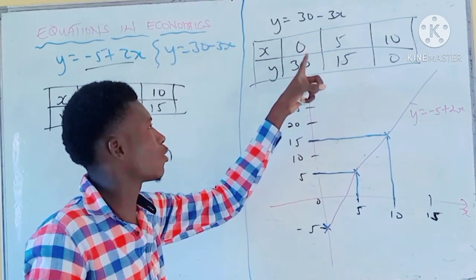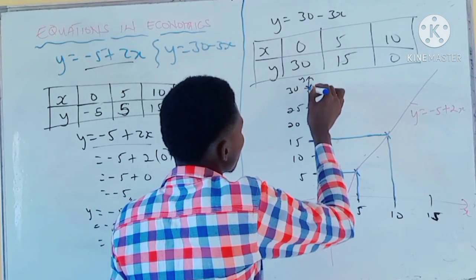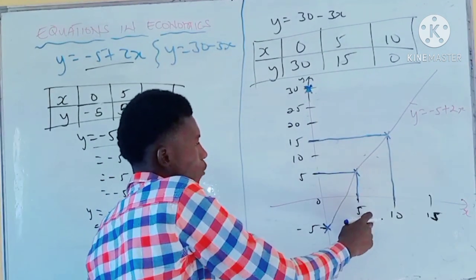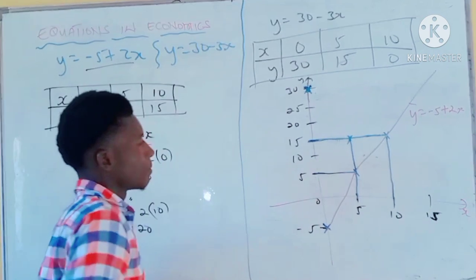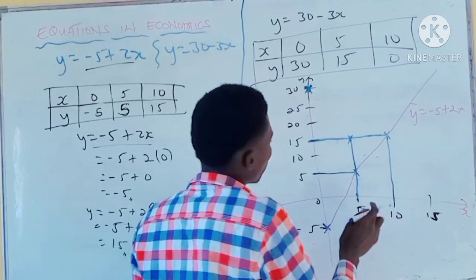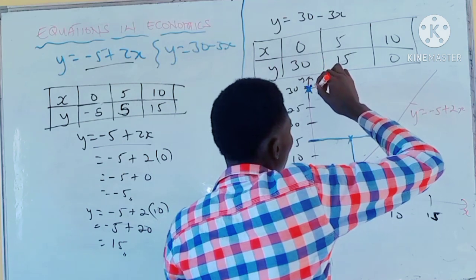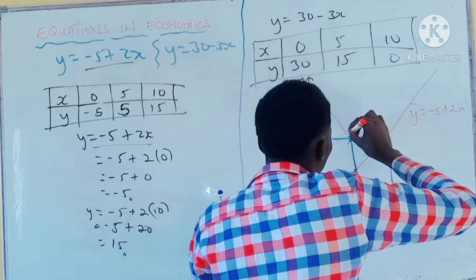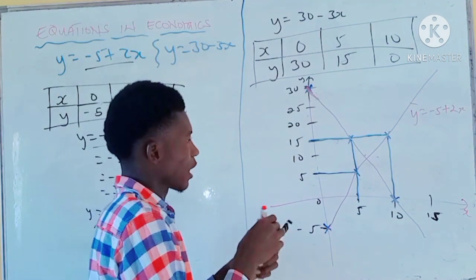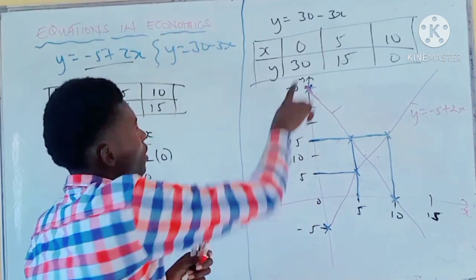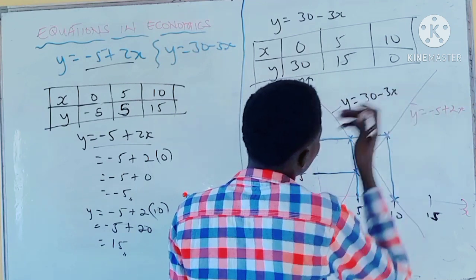Now the second equation: when x is 0, y is 30 — plot it around 30 on the y-axis. When x is 5, y is 15 — plot that here. When x is 10, y is 0 — see the linear. Draw the line from top down. The name of this graph is y equals 30 minus 3x.